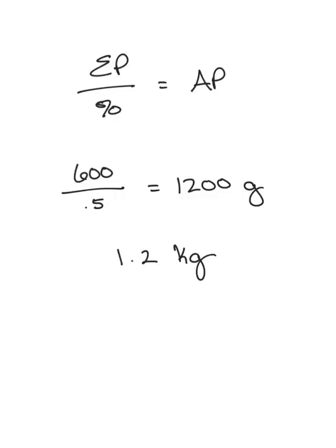We're going to use the same formula: EP divided by percentage equals AP. So 600 grams divided by 0.5 is equal to 1,200 grams. Converting this is even easier than pounds and ounces because all we have to do is move our decimal place. 1,200 grams is equal to 1.2 kilograms.